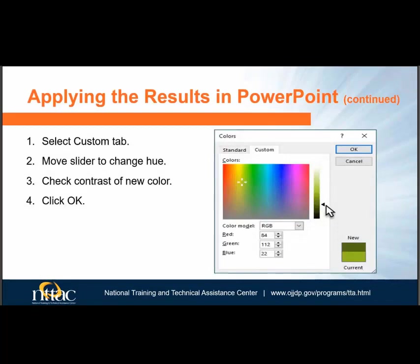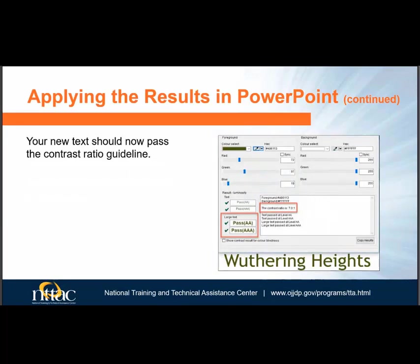If you choose to select a color not on the color palette and choose More Colors, another dialog box will open. Select the Custom tab and use the slider to change the hue of the current color so the new color passes the contrast ratio requirement of 3 to 1, because this is large text. You can use the color contrast tool right on the dialog box. Then select OK when you are satisfied with the contrast ratio. The text should now pass the guideline. Continue fixing any other contrast ratio failures in your file.